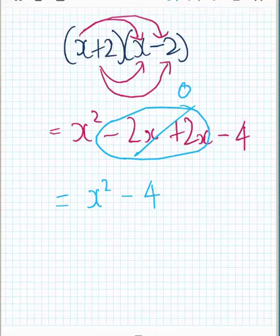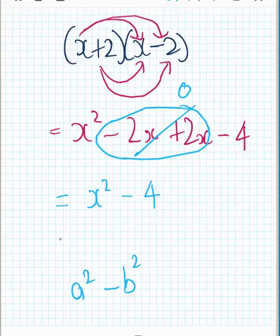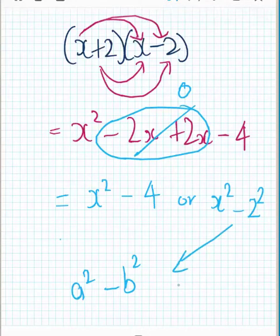That's why it's called difference — because difference means we're subtracting. This is in the form of a squared minus b squared, because that 4 was really 2 times 2. So I can write this as x squared minus 2 squared. It's still 4, and that's more clearly in the form of a squared minus b squared.